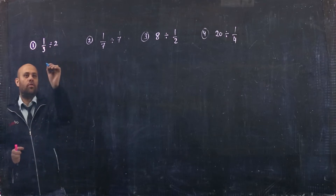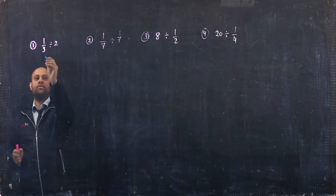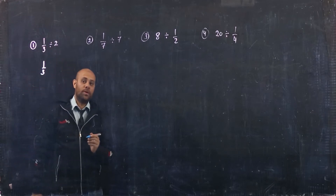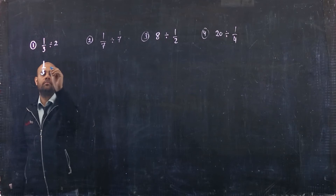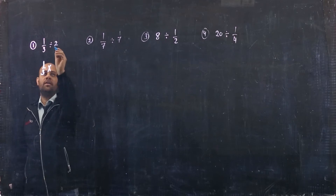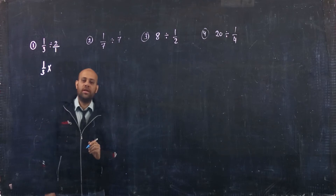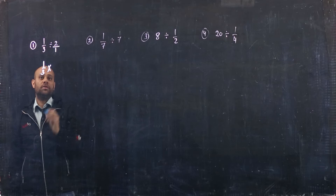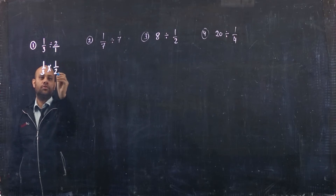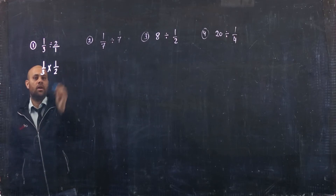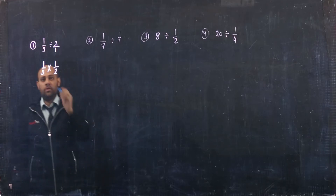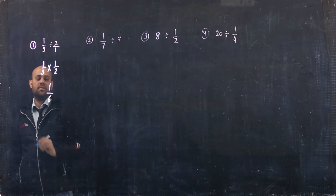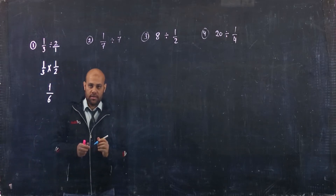First: 1/3 divided by 2. I will drop down this 1/3 and convert this division into multiplication. After that, this whole number 2 is the numerator, so you find the reciprocal of 2/1, which is 1/2. Then you multiply the two fractions: 1 by 1 equals 1, and 2 by 3 equals 6, so the answer is 1/6.